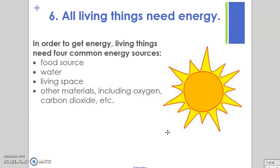The last thing all living things must have in order to be considered living is that they need energy. To produce energy, organisms have four common requirements. All living things need a food source — some way to get energy into their body, whether by consuming something or making energy from sunlight. They also need a water source. It differs from organism to organism, but they all need water taken into their body or cells in order to survive.